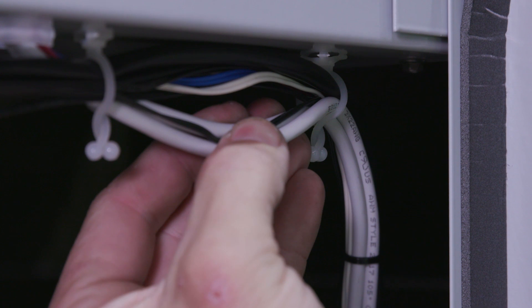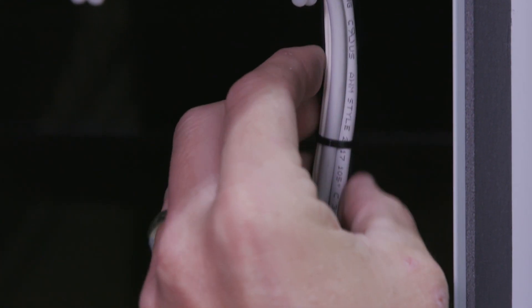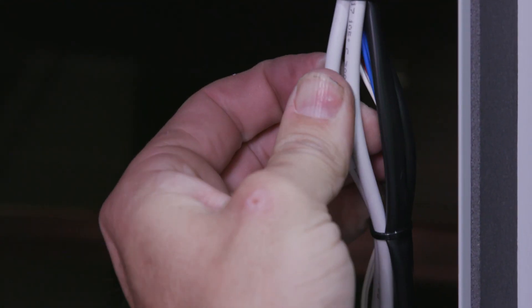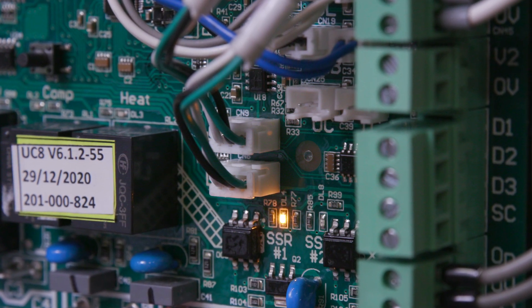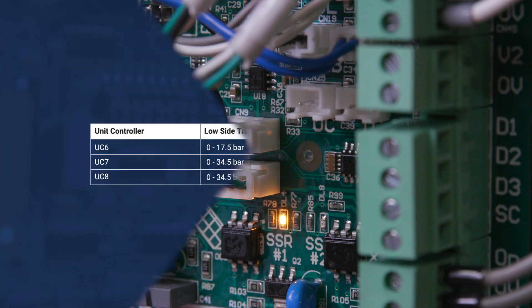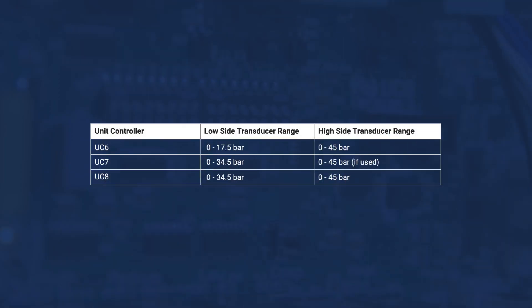Physically check transducer leads for damage. Ensure that the transducer leads are plugged into the correct location and make sure that the connections are tight and secure. Also ensure that the correct transducer range has been installed for the unit control board that is in service.